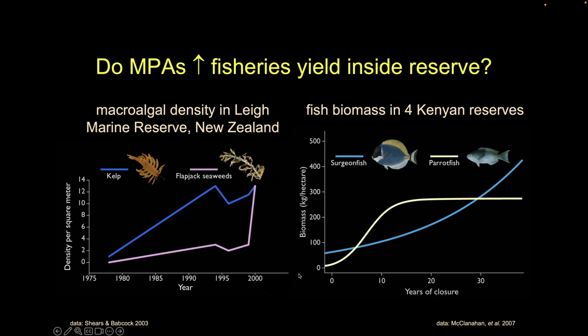A similar pattern with parrotfish — they didn't do much initially, then increased a lot before hitting a stable condition. What this tells us is that in some conditions, our extraction pressure was pretty hard on these critters, and as we've released that harvest pressure, they're responding by growing and expanding. In other cases, some condition needs to be met first — maybe a number of mates, maybe the right oceanographic condition.